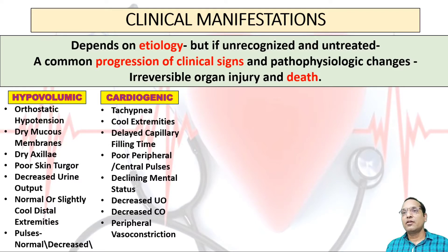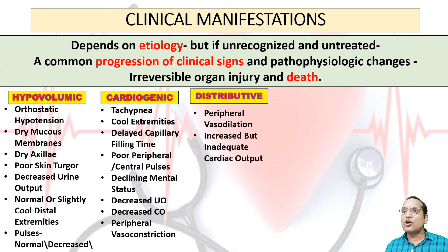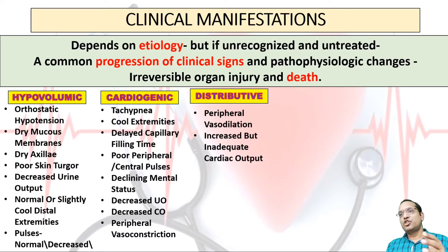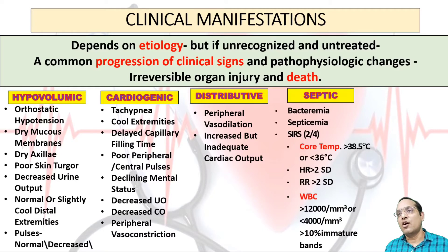In cardiogenic shock, there will be tachypnea, cool extremities, delayed capillary filling time, poor peripheral or central pulses, declined mental status, decreased urinary output, decreased cardiac output, and peripheral vasoconstriction. In distributive shock, there will be peripheral vasodilation with increased but inadequate cardiac output.